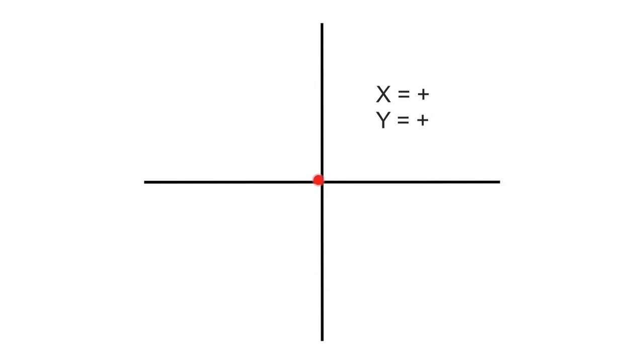Anything that is to the right of the point of origin is going to be positive. Anything to the left is negative. Anything above the point of origin is positive, and anything below is negative.